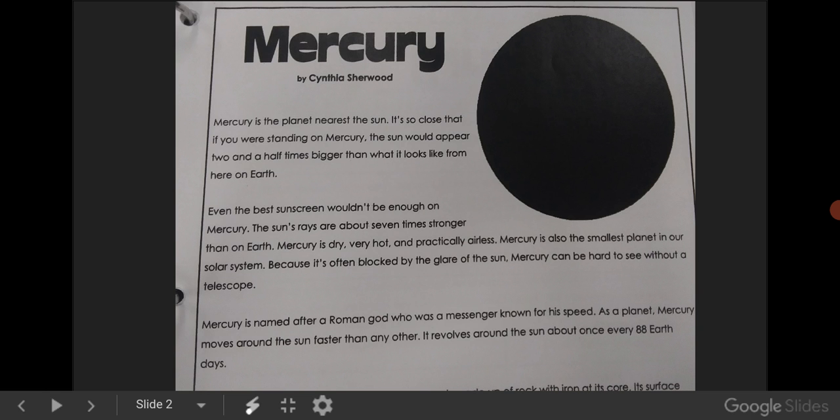So first we have Mercury. Mercury is the planet nearest the Sun. It's so close that if you were standing on Mercury, the Sun would appear two and a half times bigger than what it looks like here on Earth.